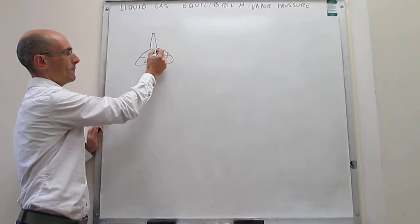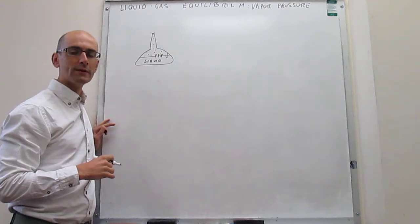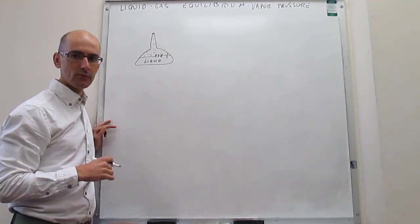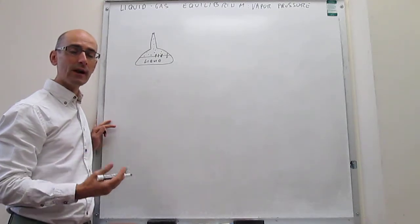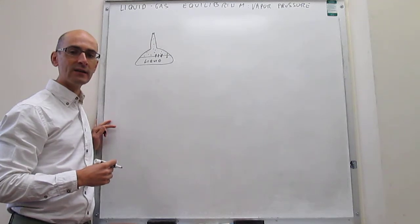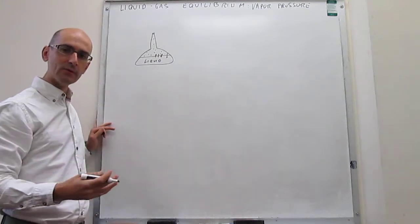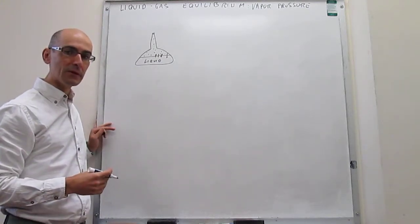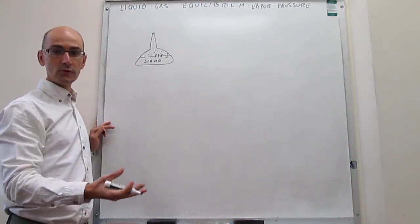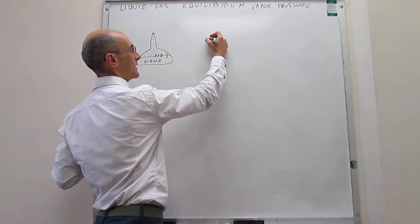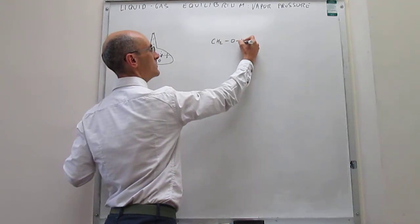The pressure of the gas that you get after that equilibrium is formed is what we call the vapor pressure of a liquid. The vapor pressure of a liquid depends on how strongly the liquid molecules are interacting with each other. If you have very strong interactions in the liquid, like hydrogen bonds, then the vapor pressure will be very low. But if the interactions between the liquid molecules are very weak, then the vapor pressure will be much higher.